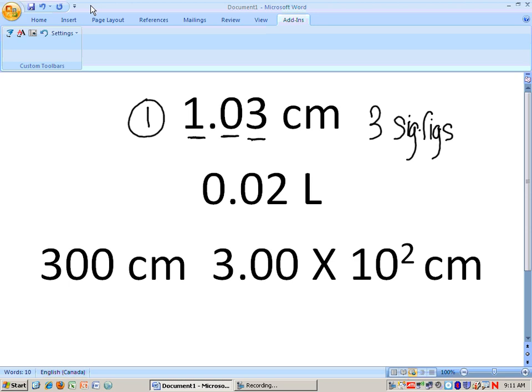All right, so our second example. Zeros at the beginning are not significant, whether they're before or after the decimal point. In this example, there is only one significant figure.